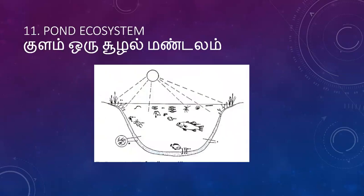Then, the pond as an ecosystem. It includes a primary consumer, secondary consumer, and finally decomposers. Biotic interaction. The autotrophic plants use solar energy to produce chemical energy. Free-floating plants, phytoplankton, and zooplankton are present.